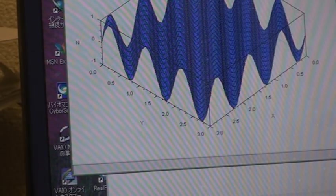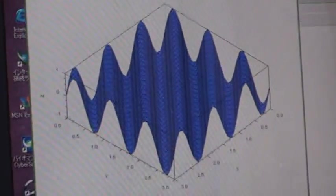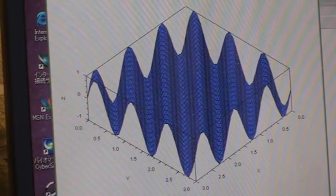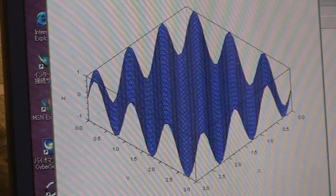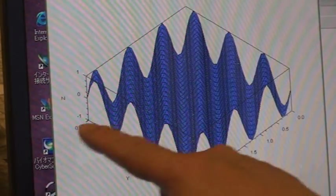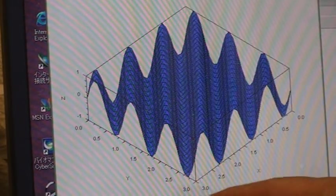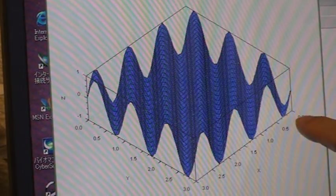This is the sine wave, three-dimensionally. Amplitude one meter, wavelength lambda equal one meter.